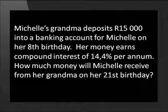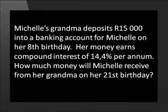Let us try an example of calculating the accumulated amount using the compound interest formula. Michelle's grandma deposits 15,000 rand into a banking account for Michelle on her 8th birthday. Her money earns compound interest of 14.4% per annum. How much money will Michelle receive from her grandma on her 21st birthday? Always start by writing down the formula and listing the information you've been given.